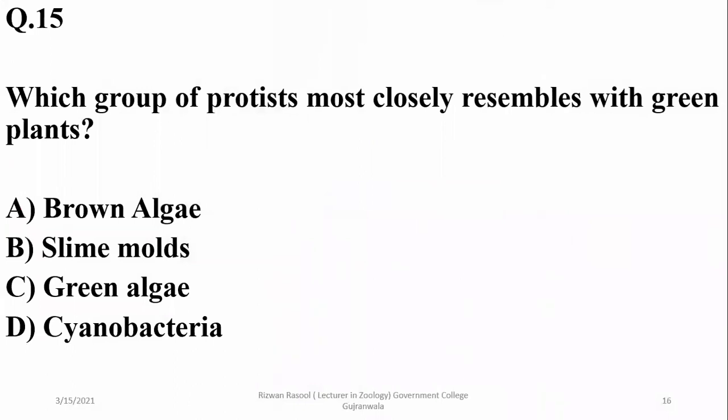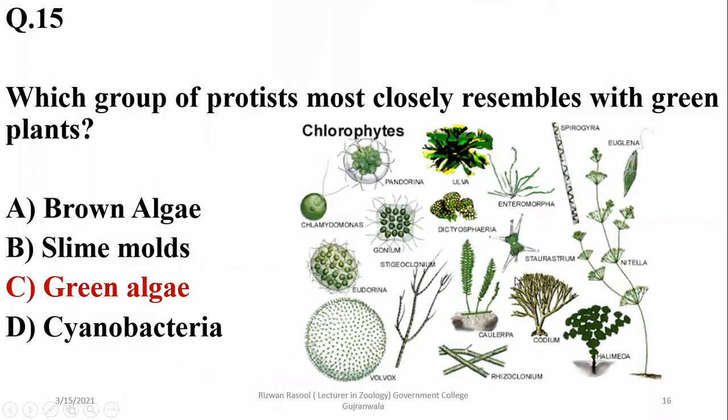Which group of protists most closely resembles green plants? It is green algae, which share multiple features with green plants.